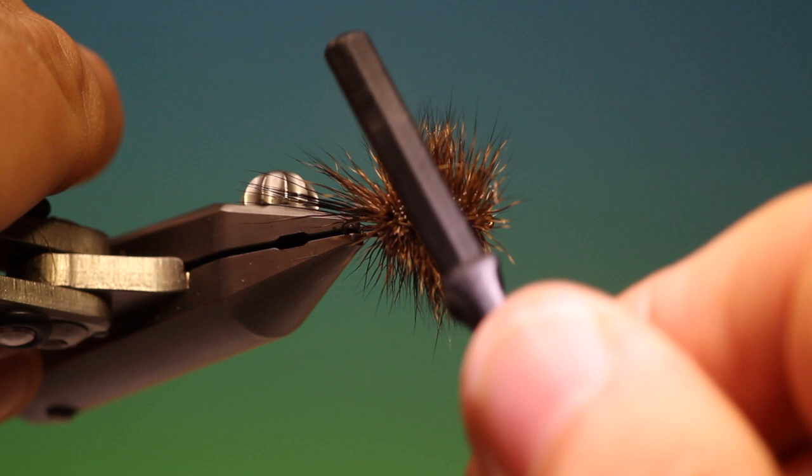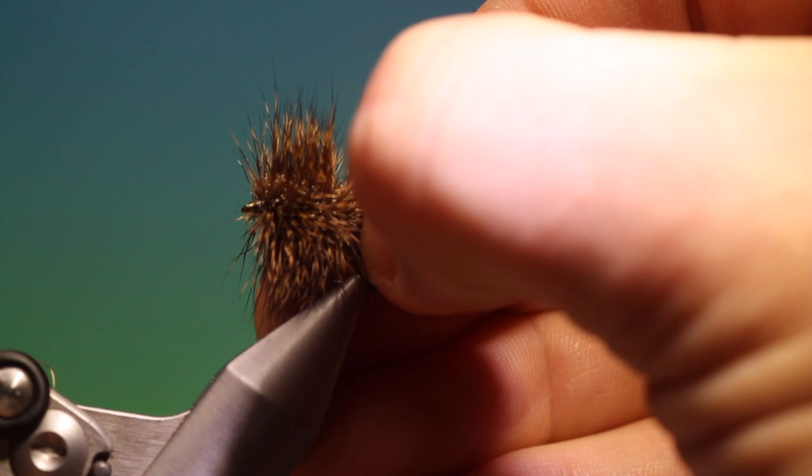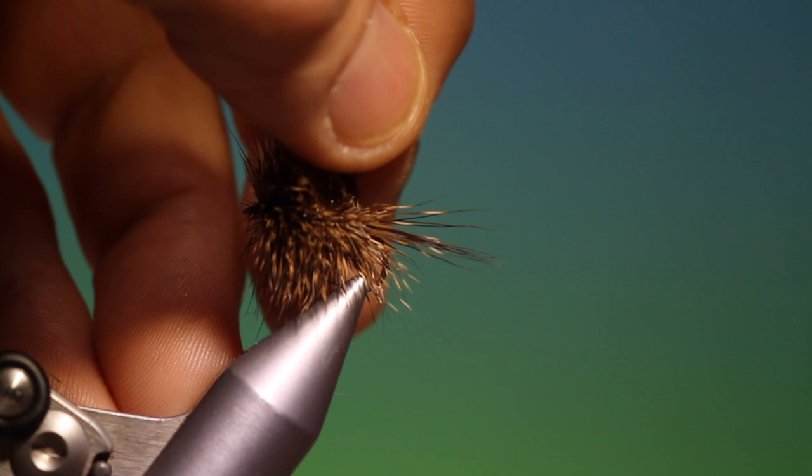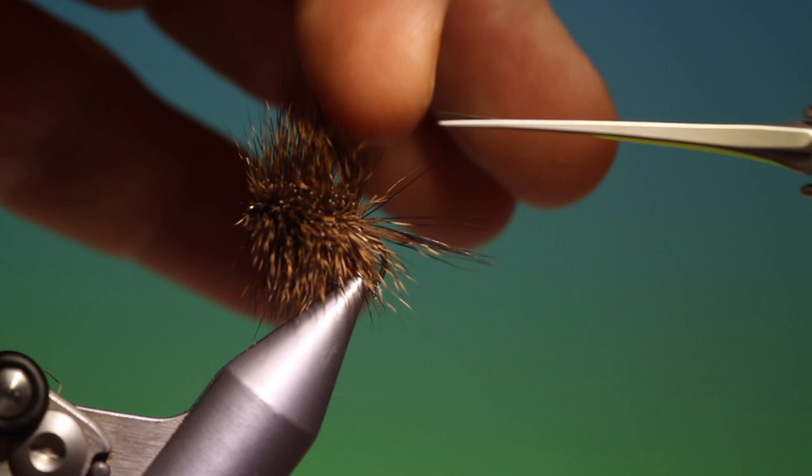Then what I have to do is take it out the vise. Turn it around. And then we can come in. Don't want to cut that tail. And trim the body. Now when you're trimming the body.